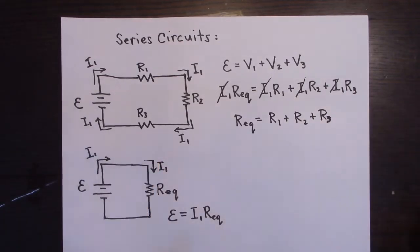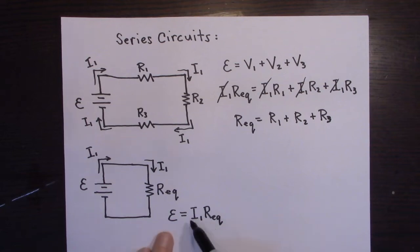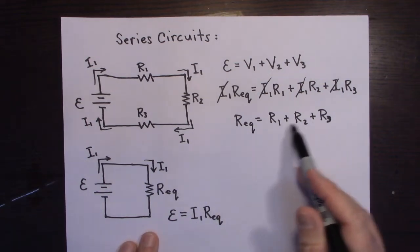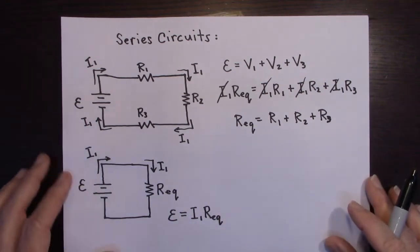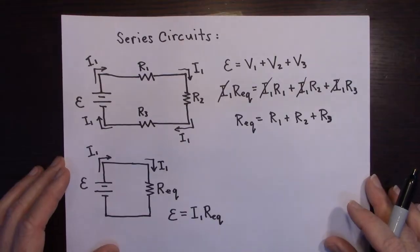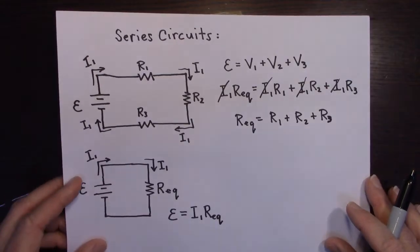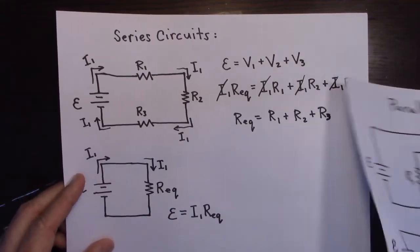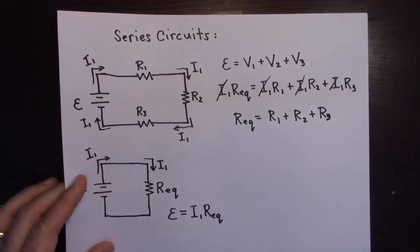So R_equivalent for a series circuit is always bigger than any individual resistor, because it's the sum of all of them. Just keep that in mind. Now let's do the same for parallel circuits.